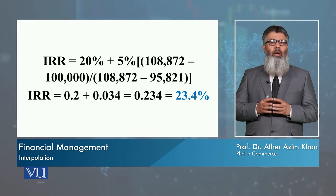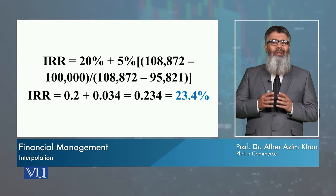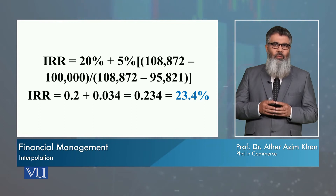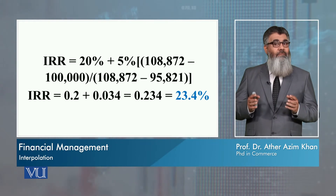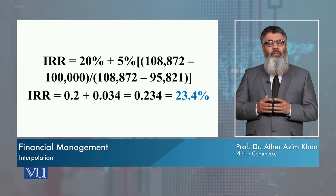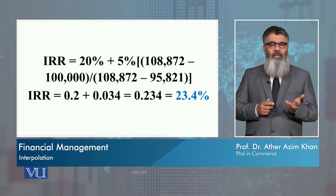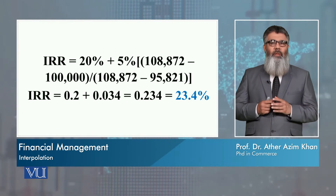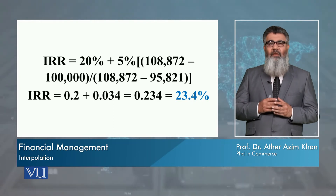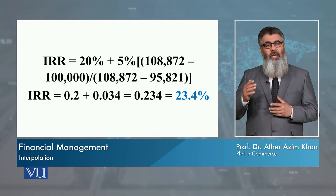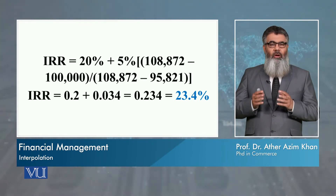We divide that amount by the difference between the sum of present values of inflows at 20% and at 25%, because these are the two rates we have interpolated. So from 108,872 — the present value of inflows at 20% — we subtract 95,821, which is the present value of inflows at 25%.